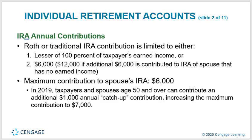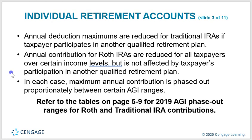A Roth or traditional IRA contribution is limited to the lesser of 100% of the taxpayer's earned income or $6,000. Contributions to a spouse's IRA with no earned income are also limited to $6,000. In 2019, taxpayers and spouses aged 50 and over can contribute an additional $1,000 annual catch-up contribution, increasing the maximum to $7,000. Annual deduction maximums are reduced for traditional IRAs if taxpayers participate in another qualified retirement plan. Roth IRA contributions are reduced for taxpayers over certain income limits. The maximum annual contribution is phased out proportionately between certain AGI ranges.